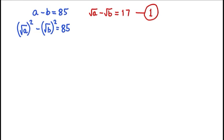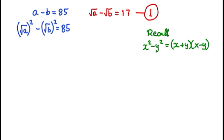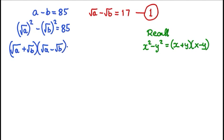Now we need to recall the difference of two squares: x squared minus y squared is equal to the product of the conjugates, x plus y by x minus y. We'll apply this here and rewrite the equation as the square root of a plus the square root of b, all multiplied by the square root of a minus the square root of b, is equal to 85.